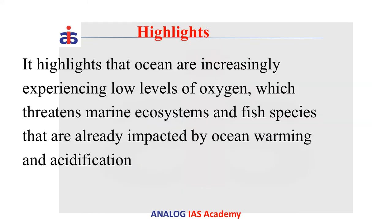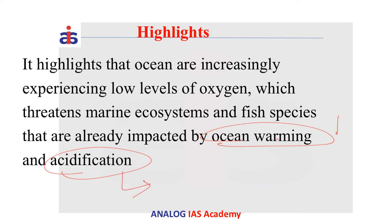Apart from ocean deoxygenation, there are some other problems like ocean warming and acidification. Due to acidification, the life in ocean waters is severely affected, and ocean warming has been one of the reasons why coral bleaching is occurring. Coral reef systems are considered to be one of the most significant ecosystems for a wide variety of animals present in ocean waters. Along with these existing problems, we now have the new problem of low levels of oxygen.